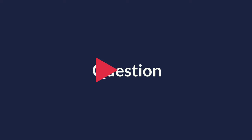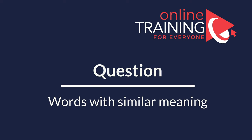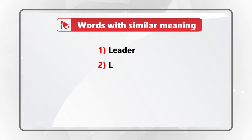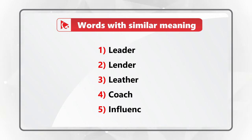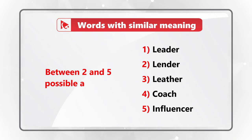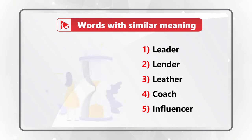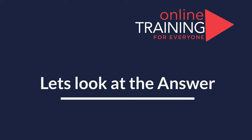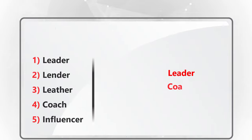I love this question because it uses your brain power and also allows you to improve your English vocabulary. You need to identify all the words with the similar meaning. The words are: leader, lender, leather, coach, and influencer. Keep in mind that there could be between two and five words in the answer. Some words sound similar but represent very different meanings. Ready or not, I am going to jump to the solution — the similar words are leader, coach, and influencer.